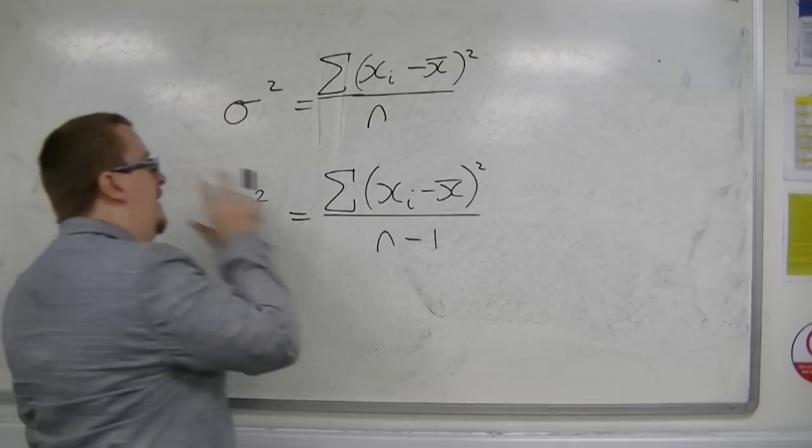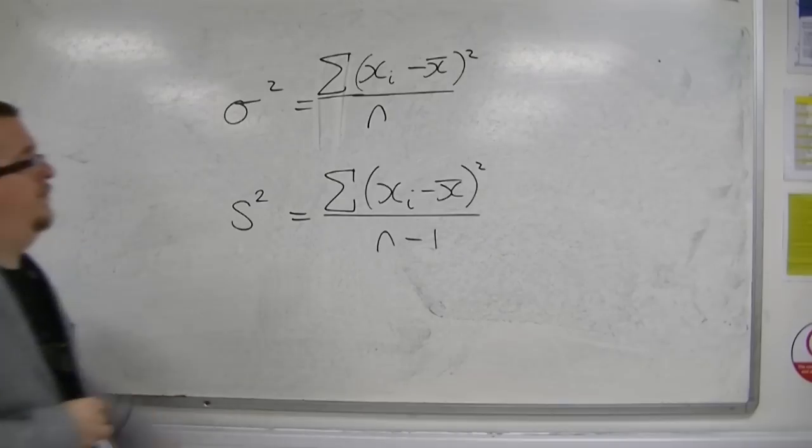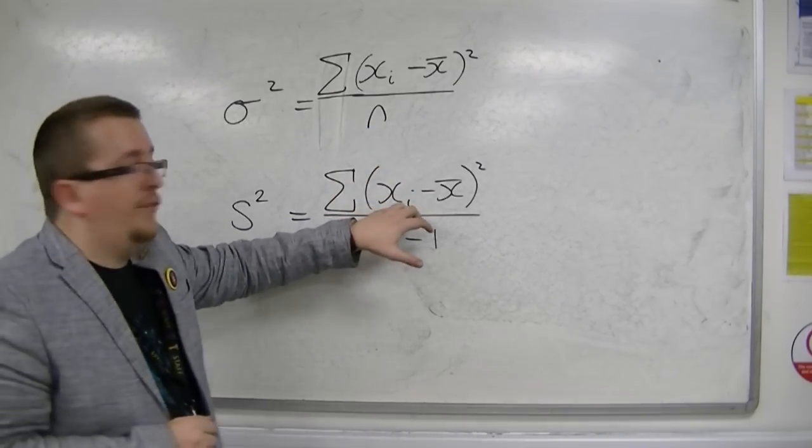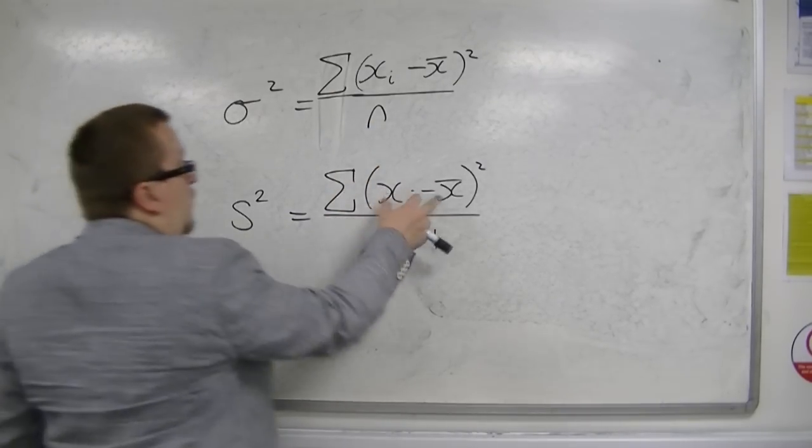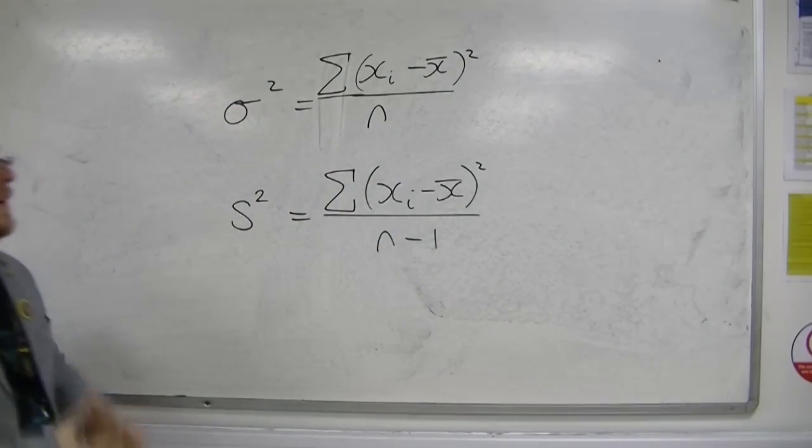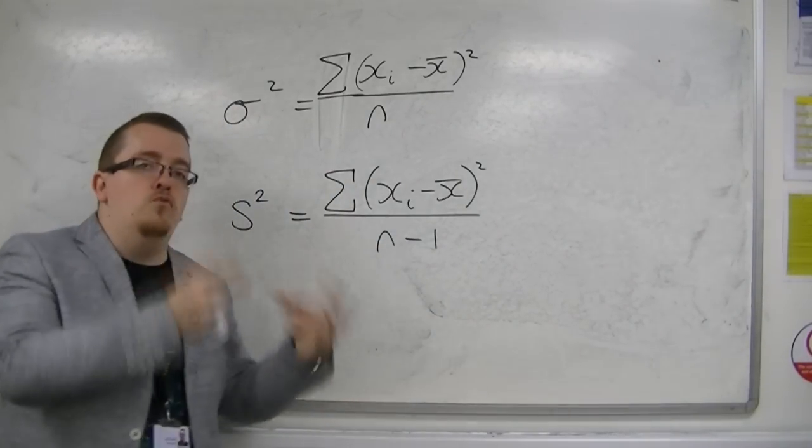So an unbiased estimator for the variance can be found by taking each of the sample elements, taking away the mean, squaring them, summing them all together, and dividing by n minus 1, rather than n.